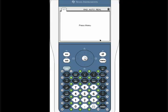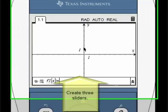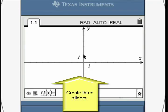Open a new graphing window. Create three sliders by pressing Menu, 1, and A for each slider.